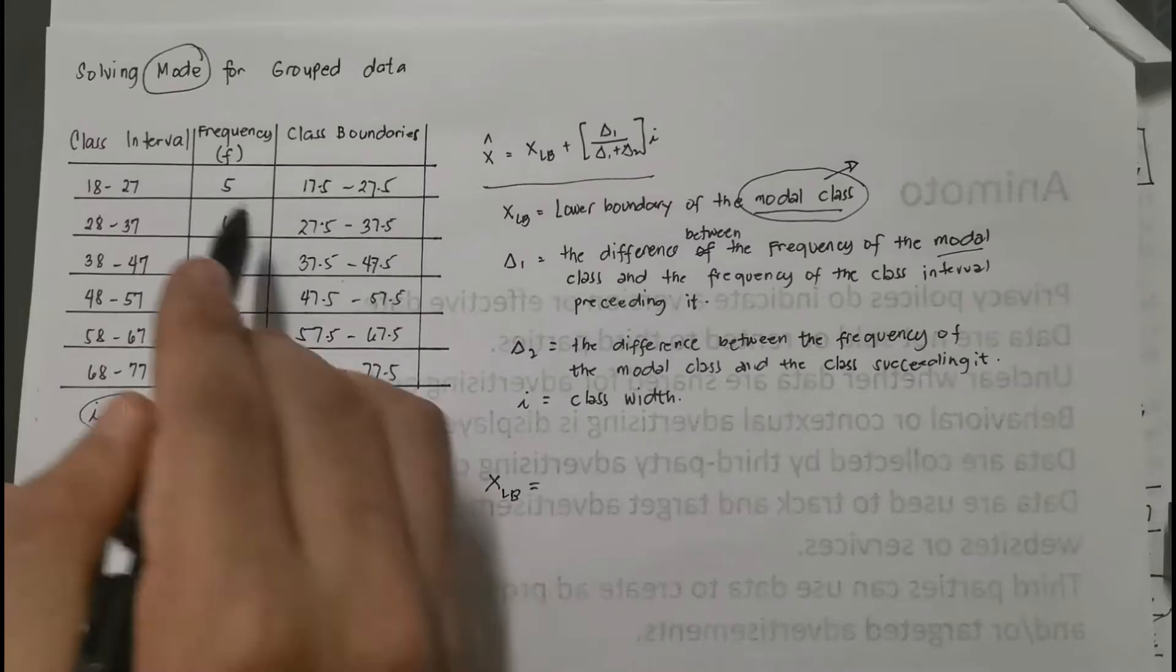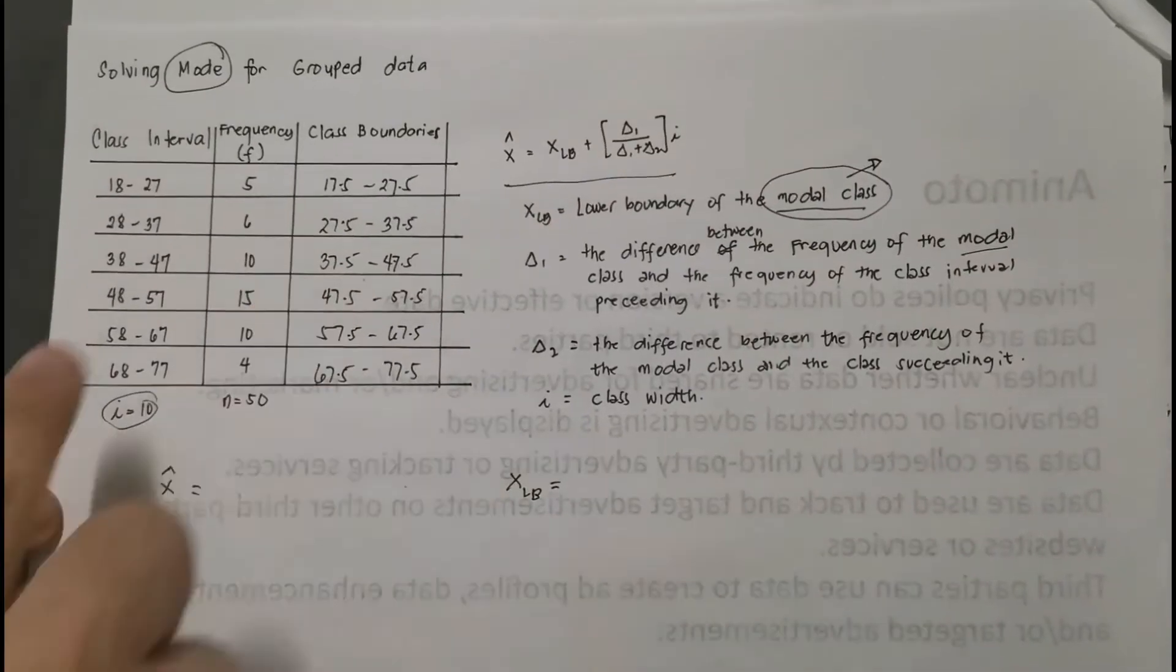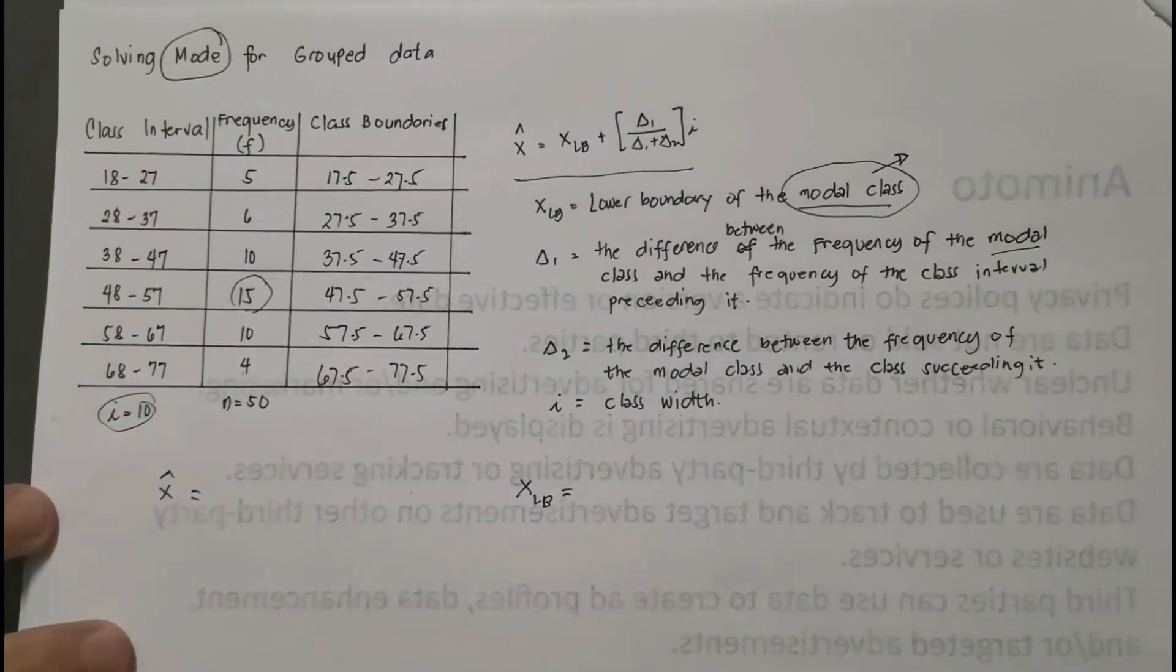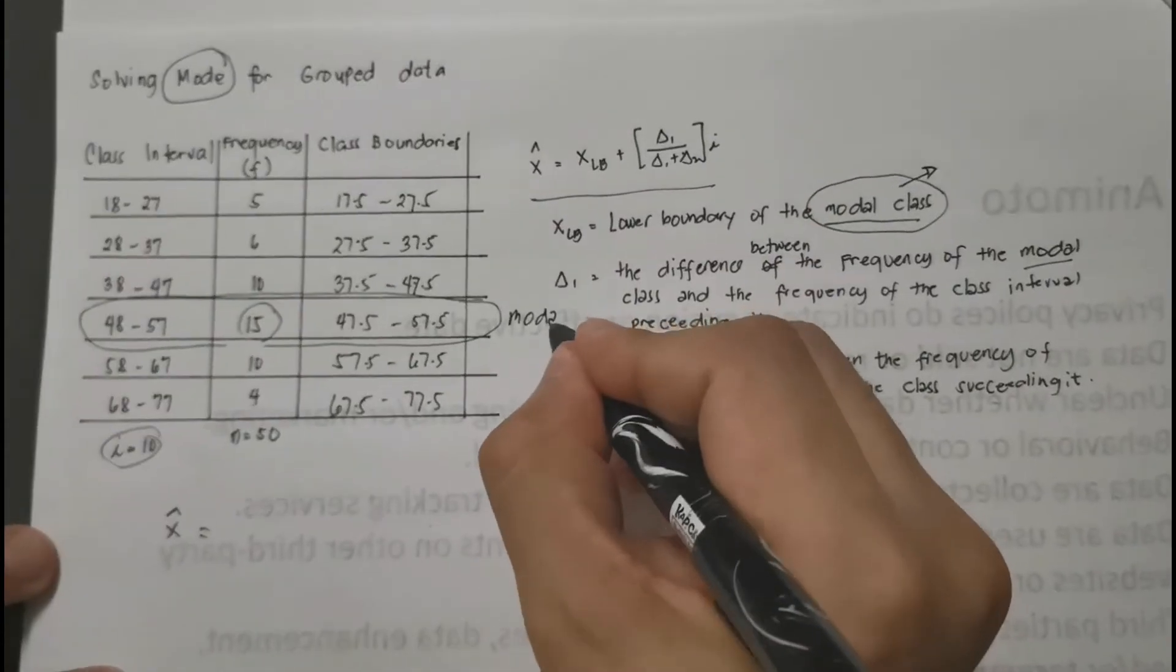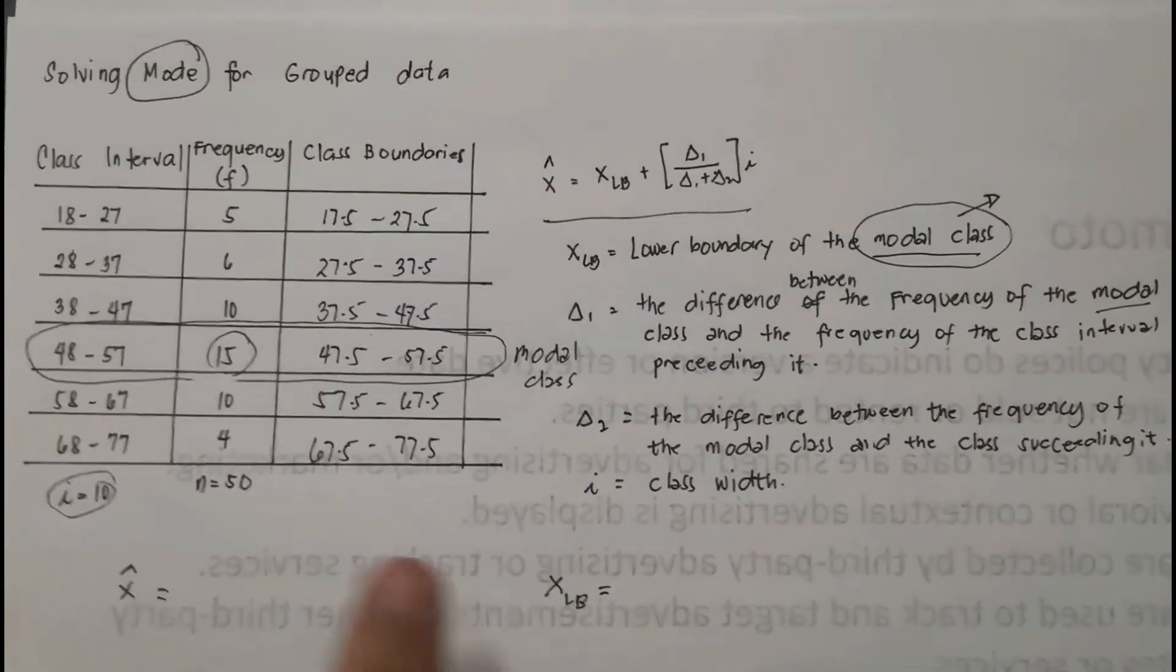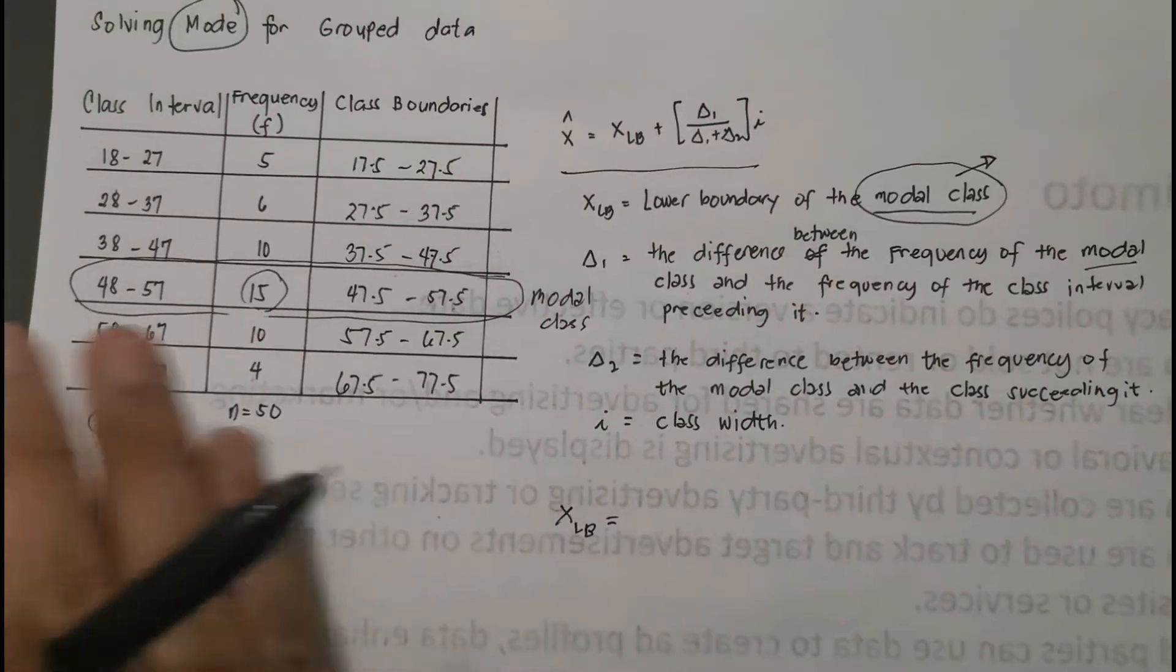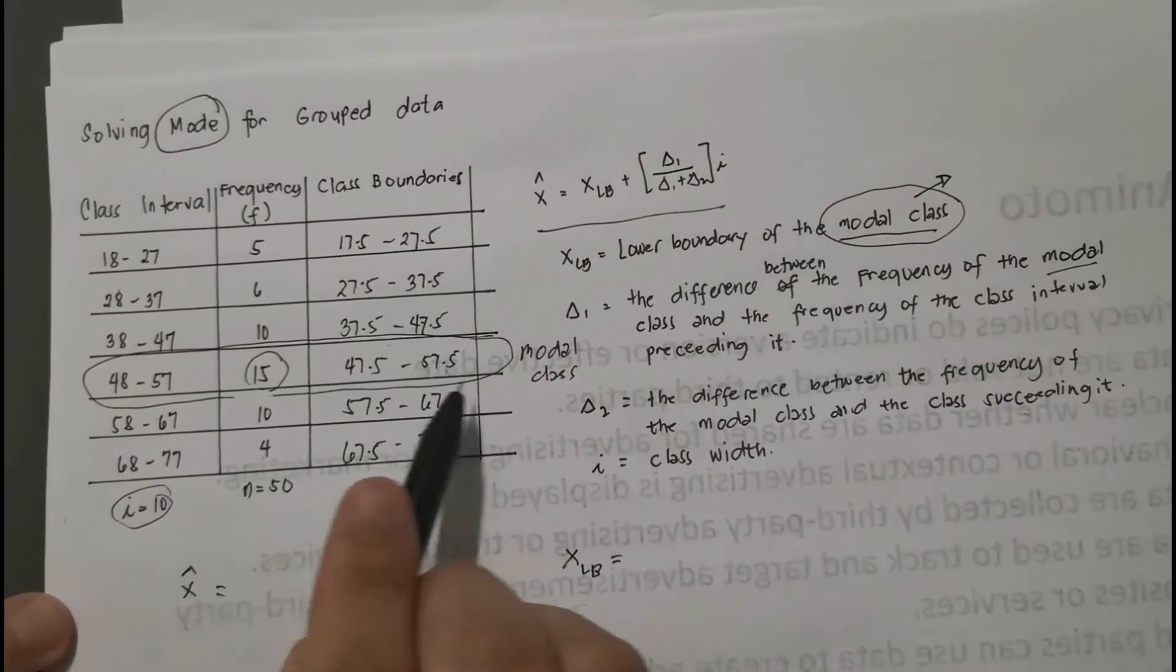So to know that one, or to find that value or to identify the modal class, simply we refer in our frequency column. In the frequency we will look only at the interval with the highest frequency. In this case, the highest frequency is 15 here, and this is its class interval. Okay, let me highlight this one. This is now our modal class. Again, to find the modal class, simply find the class interval with the highest frequency. That's where your modal class is, and for sure the mode of the given data set is found in that interval.